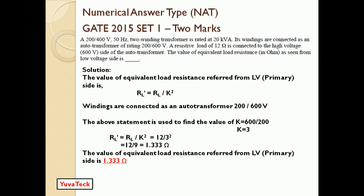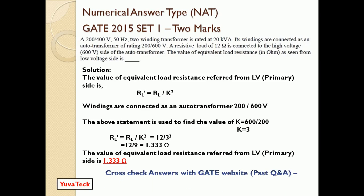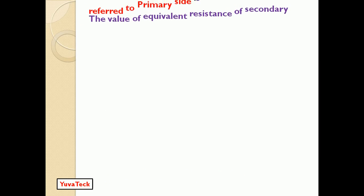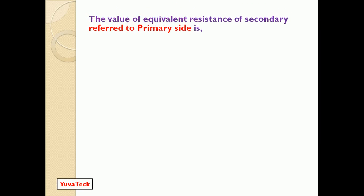This is the required answer. The value of equivalent load resistance referred from the primary side is 1.333 ohms. You can cross-check this answer with the GATE website. Since it is a numerical answer type, the answer is acceptable in the range from 1.3 to 1.4, so any value between these two ranges can be provided.